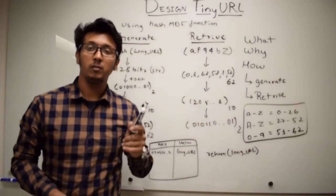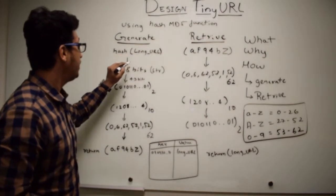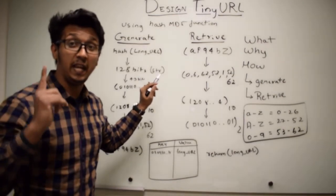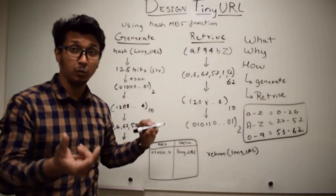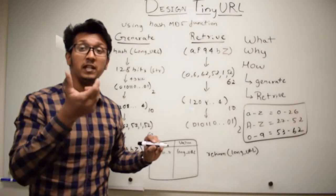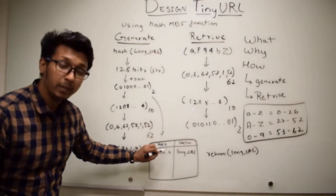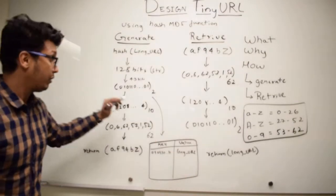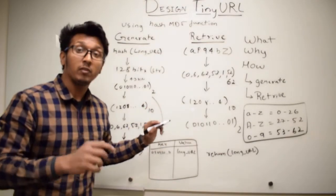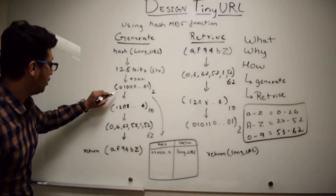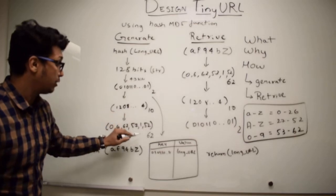Now let me explain the generate and retrieve functions implemented using the MD5 hash function. When a user provides a long URL, we take that long URL and generate a hash string of length 128 bits. From these 128 bits, we take only 43 bits, which is more than sufficient to represent a trillion values. We use this as the key and store it in our database, with the long URL as the value. From this key, we then generate our seven-digit alphanumeric value by converting it to a base 10 value and then to a base 62 value.